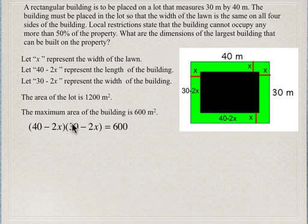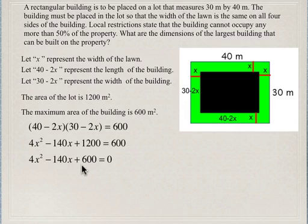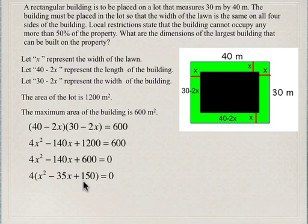Now we use FOIL to expand the equation. The area of the building is (40 minus 2x) times (30 minus 2x), set equal to 600. Expanding and rearranging gives 4x squared minus 140x plus 1200, and subtracting 600 from both sides simplifies to the quadratic equation 4x squared minus 140x plus 600 equals zero. There is a common factor of 4, so factoring that out gives 4 times (x squared minus 35x plus 150) equals zero.